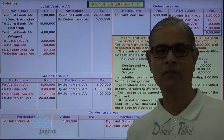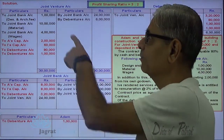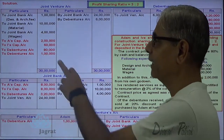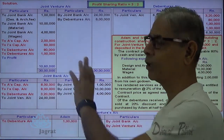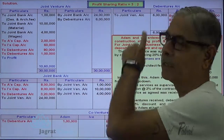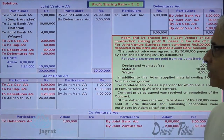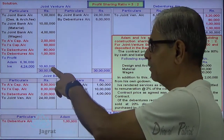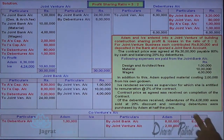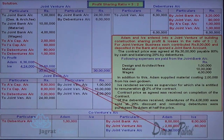Now I want to find out the profit of joint venture business. Total of credit minus total of debit gives the profit. So 30 lakhs minus the total debits — 1 lakh 11 lakh, 4 lakh, 2 lakh, 60,000, 80,000, 1 lakh — gives a profit of 10 lakhs 60,000. This profit will be distributed in the ratio of 3 to 2. Adam's share is 3/5: 10 lakhs 60,000 into 3/5 equals 6 lakhs 36,000. Eve's share is 2/5: 4 lakhs 24,000. Joint venture account debit to partners' capital account credit — the profit is credited to the partners' capital account.